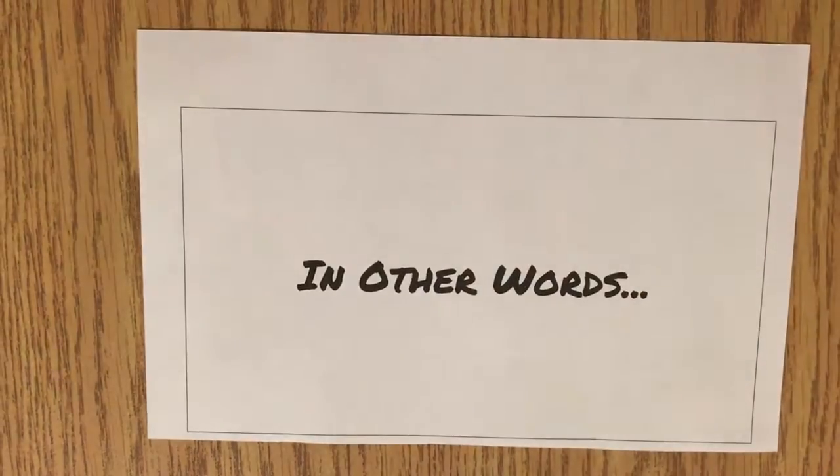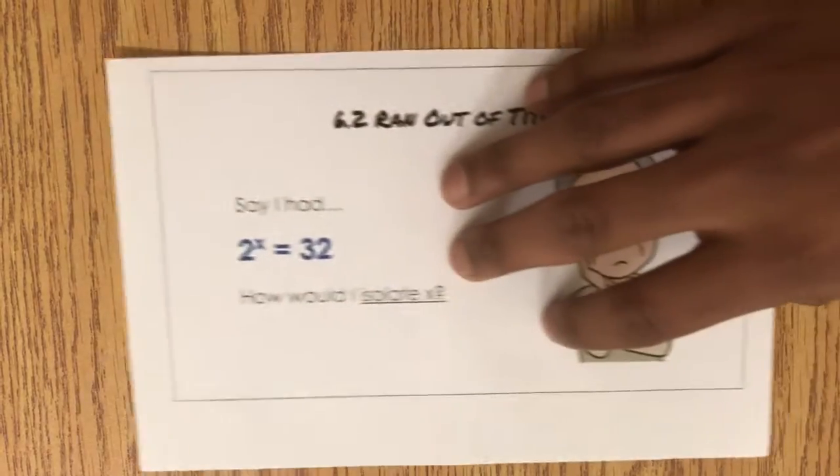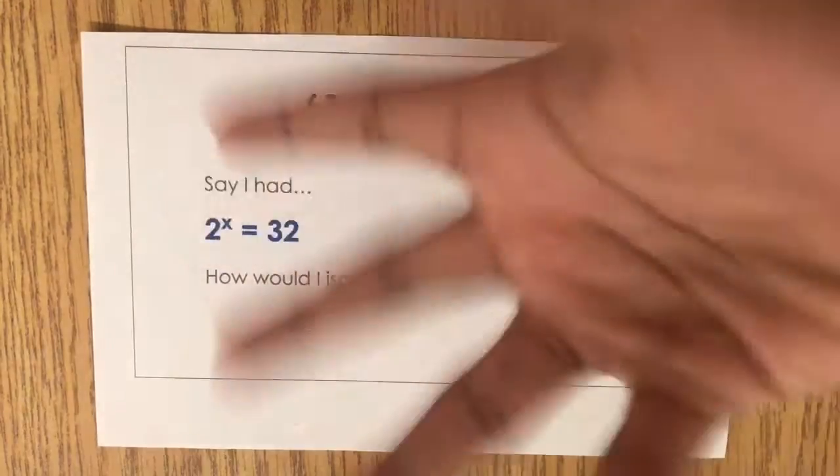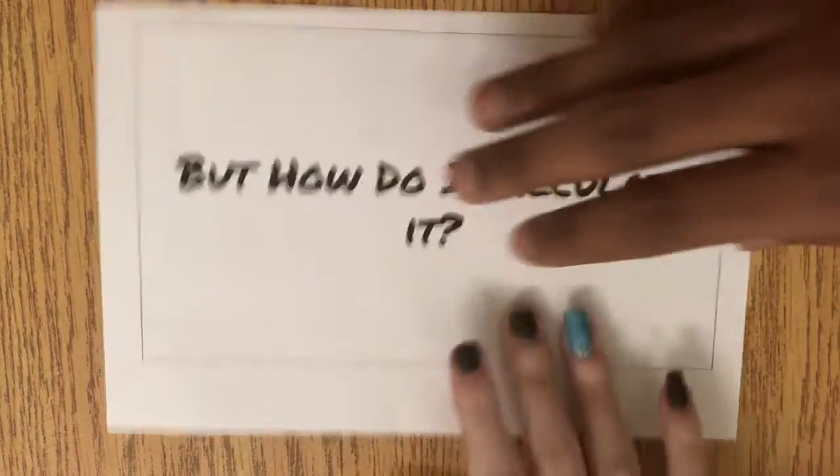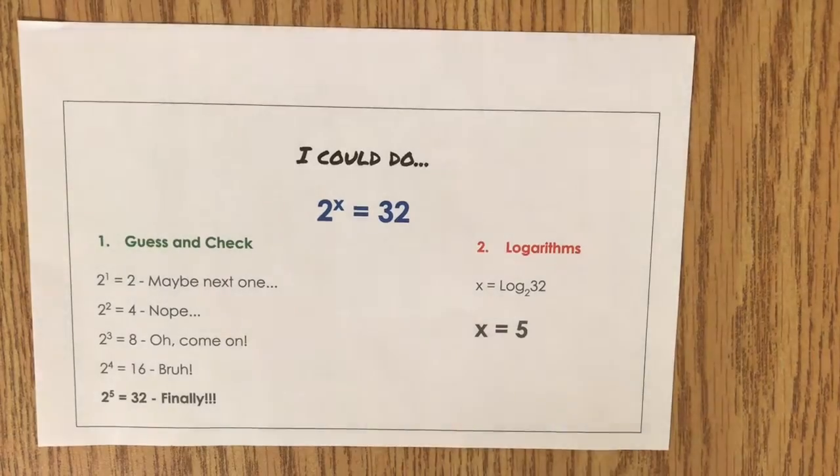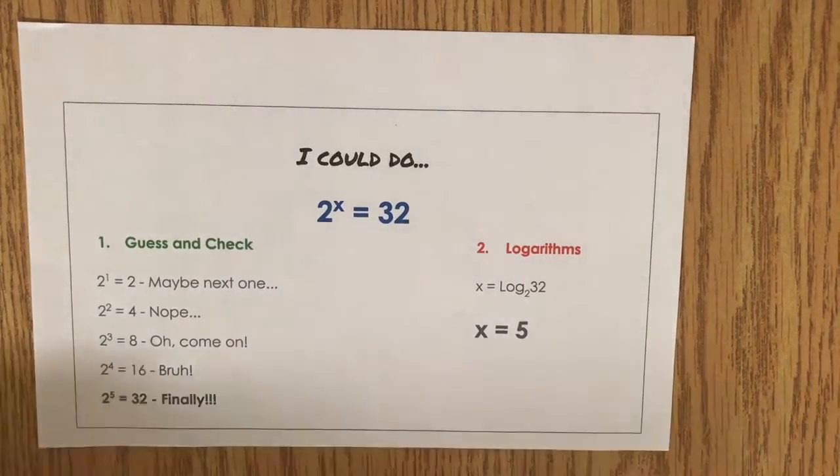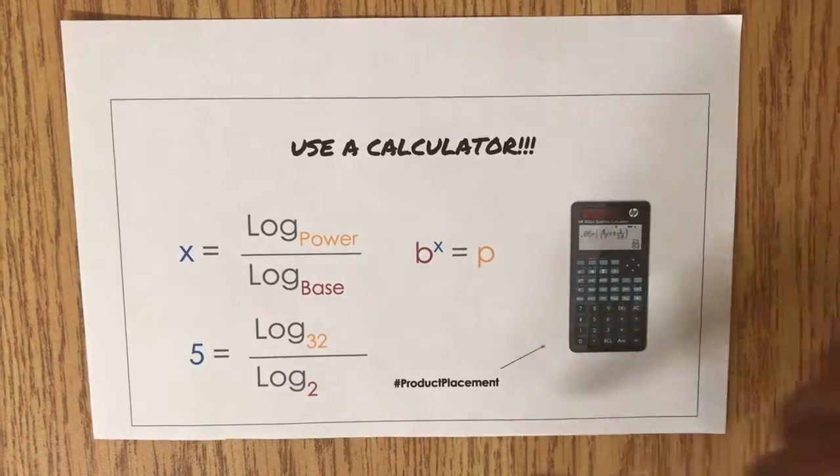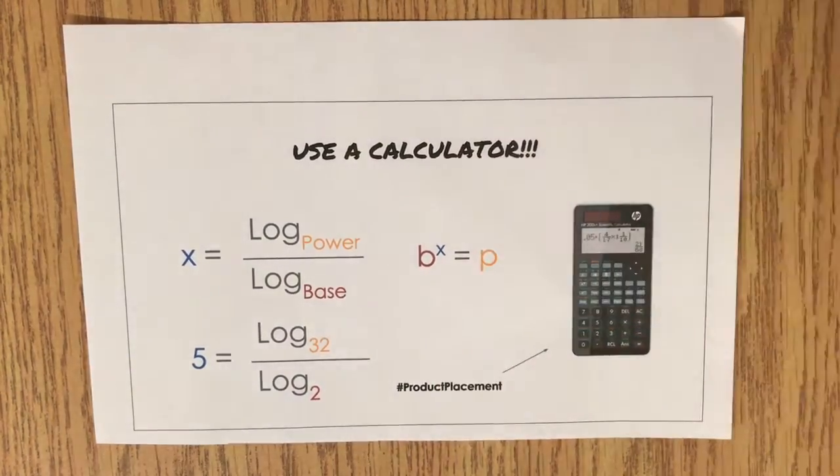In other words, say I had 2 to the x equals 32. How would I isolate x? I could do guess and check, but that would take too long. So we could use logarithms. But how would I calculate it? I use a calculator. By using x equals log power over log base, we can easily find the exponent.